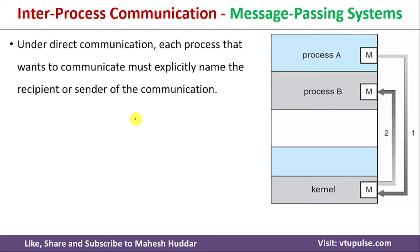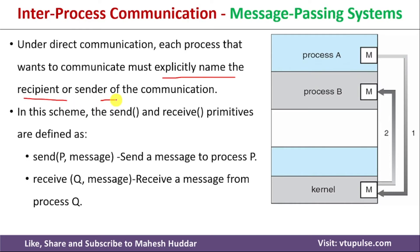The first is Direct Communication. In Direct Communication, each process that wants to communicate must explicitly name the recipient or the sender. For example, Send(P, message) means the process is trying to send a message to Process P. Receive(Q, message) means the process is waiting for a message from Process Q. That is the meaning of send and receive in Direct Communication.